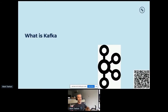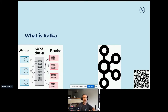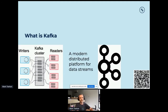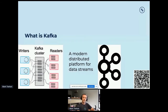Before we get into talking about particular APIs, just a quick recap on what Kafka is. Kafka is a data processing platform. It consists of a cluster of brokers — writers write to that cluster and readers read from that cluster. It's a modern distributed platform for data streams, and it's been around on the Apache Software Foundation since about 2011, approaching 10 years as an Apache project.